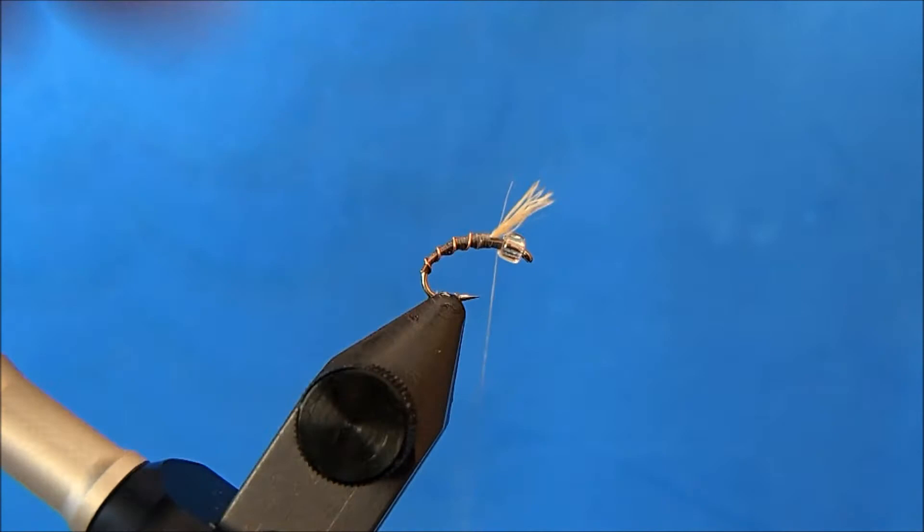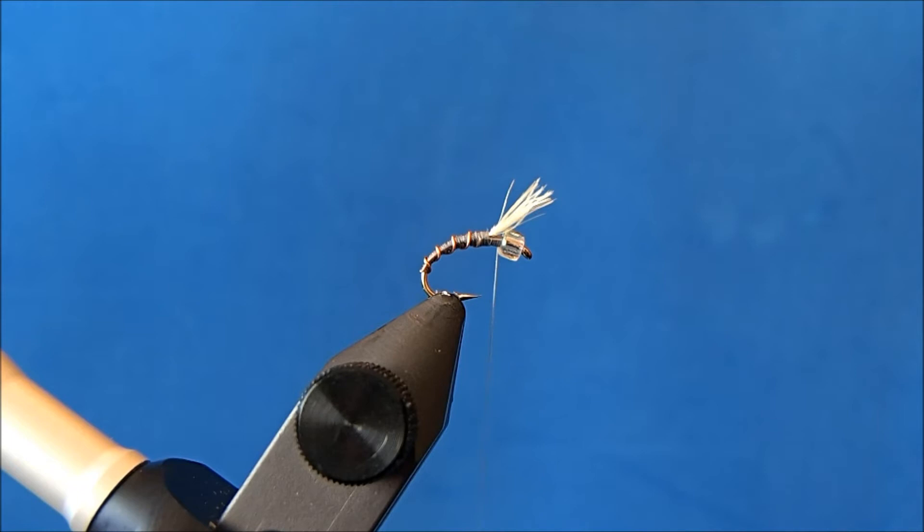And now I'll make my wraps in front of the bead. I'm doing that just to get the thread away from the body because I'm going to add some Sally Hansen's Hard as Nails to this.